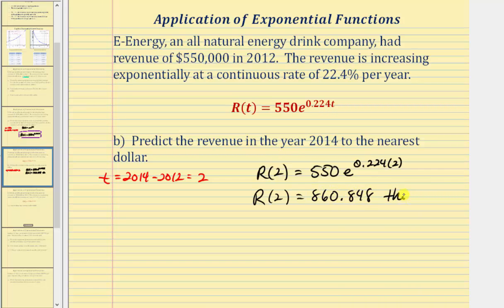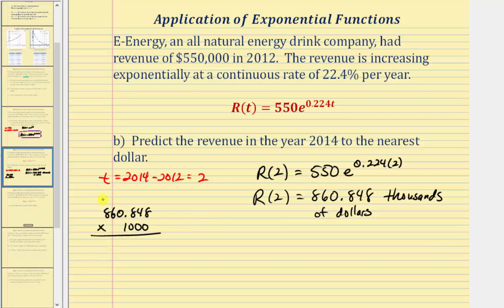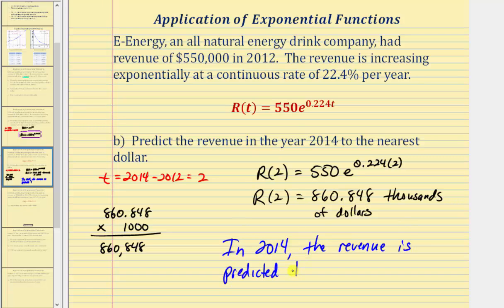This represents thousands of dollars, so to convert to dollars we take 860.848 and multiply by 1,000 — the same as moving the decimal point three places to the right — which gives $860,848. This means in 2014, the revenue is predicted to be $860,848.